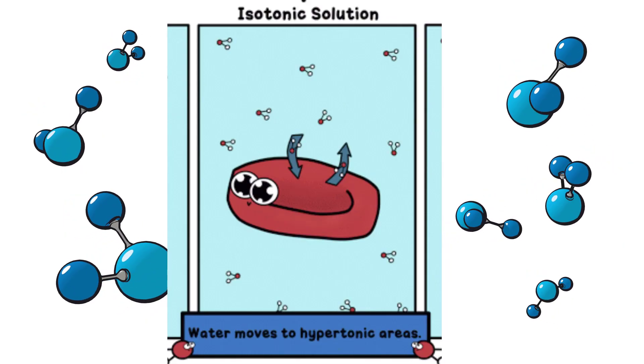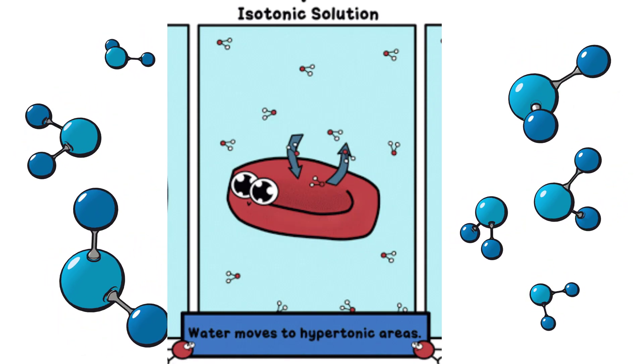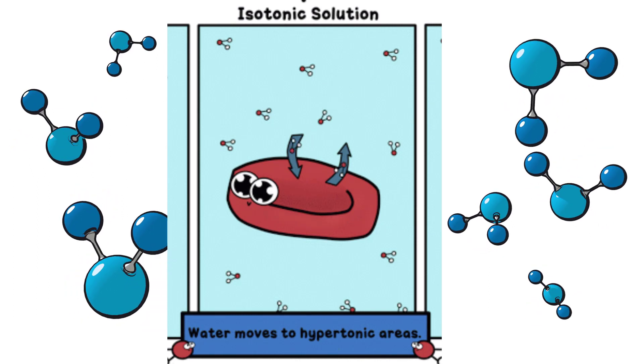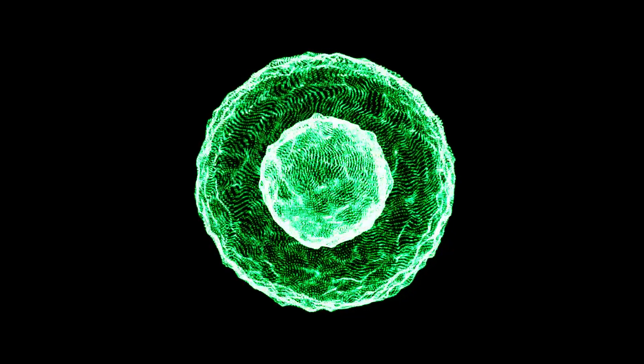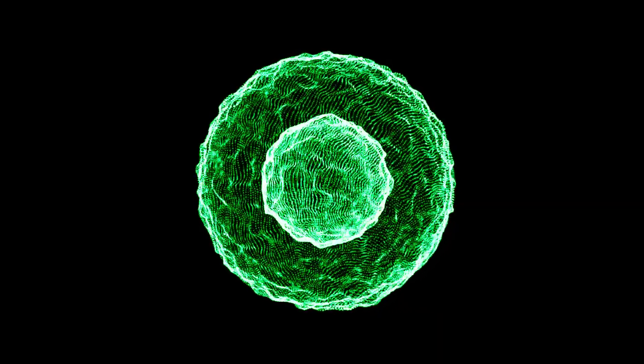In an isotonic solution, the amount of water transported into the cell will equal the amount of water transported out of the cell. Thus, the solute concentration inside the cell is equal to the solution outside the cell.